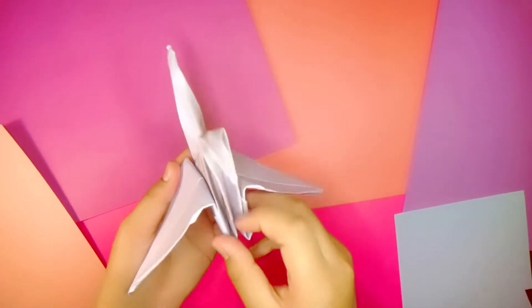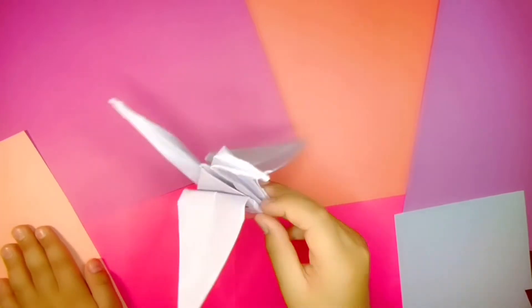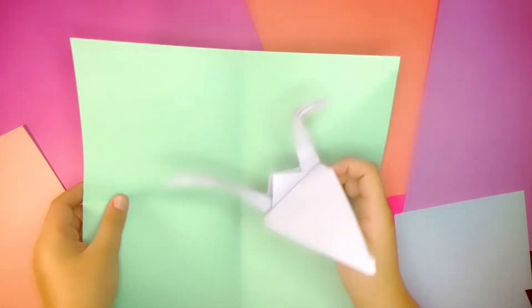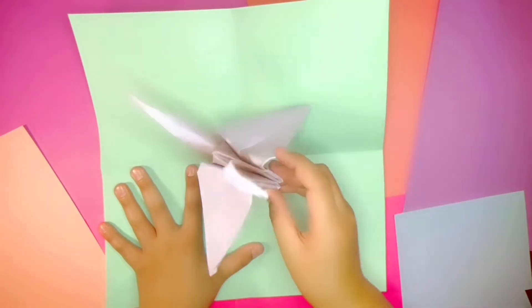Hello everybody and welcome to Rainbow Revel. Today we're going to be making a crane. For this project you'll need one piece of square paper.